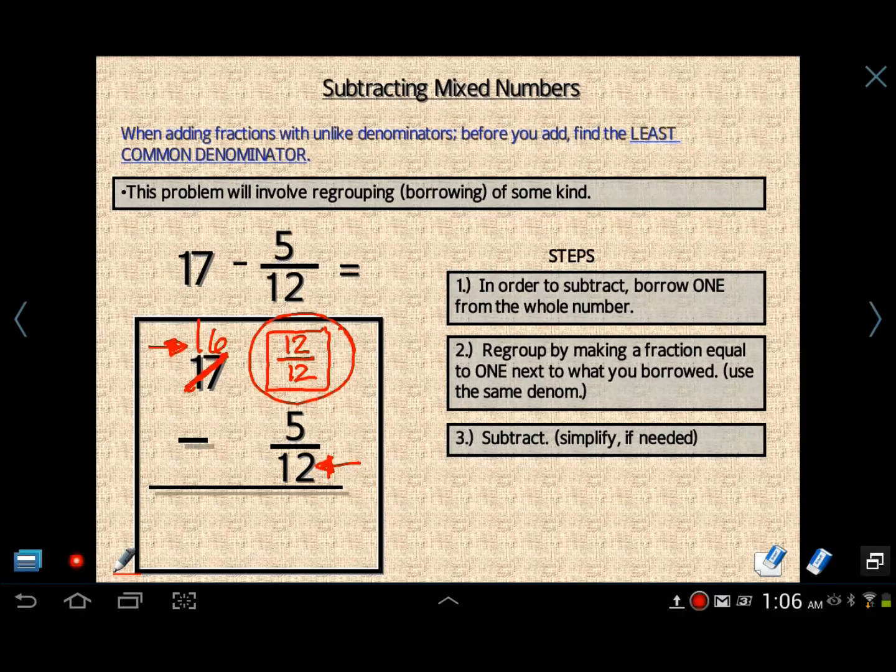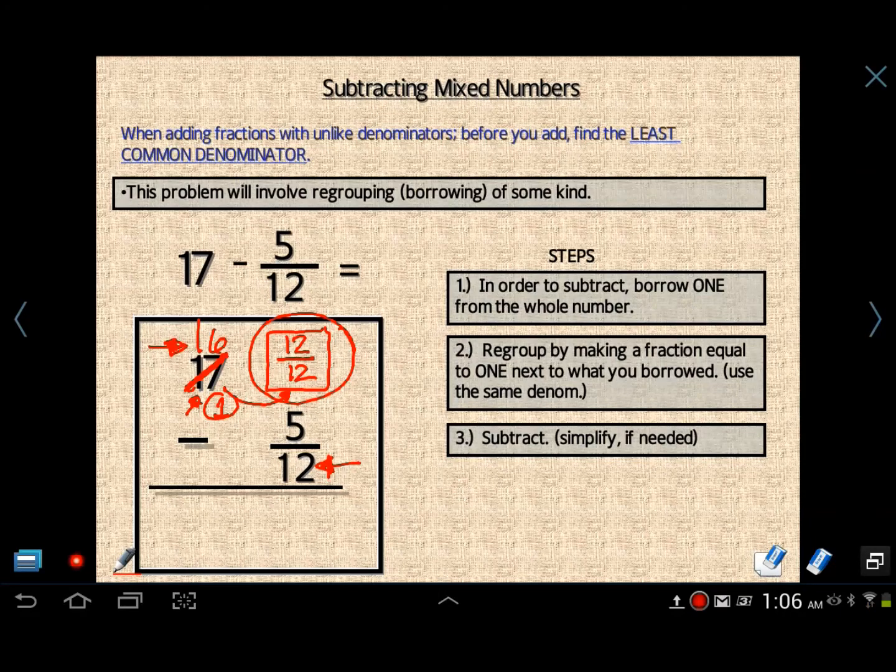Kind of recap what we just did. We borrowed from 17. How much did we borrow? We borrowed 1 whole. That became 16. Now, when we give it back to the fraction, we gave back as 12 12ths. Anything over itself is equal to 1.